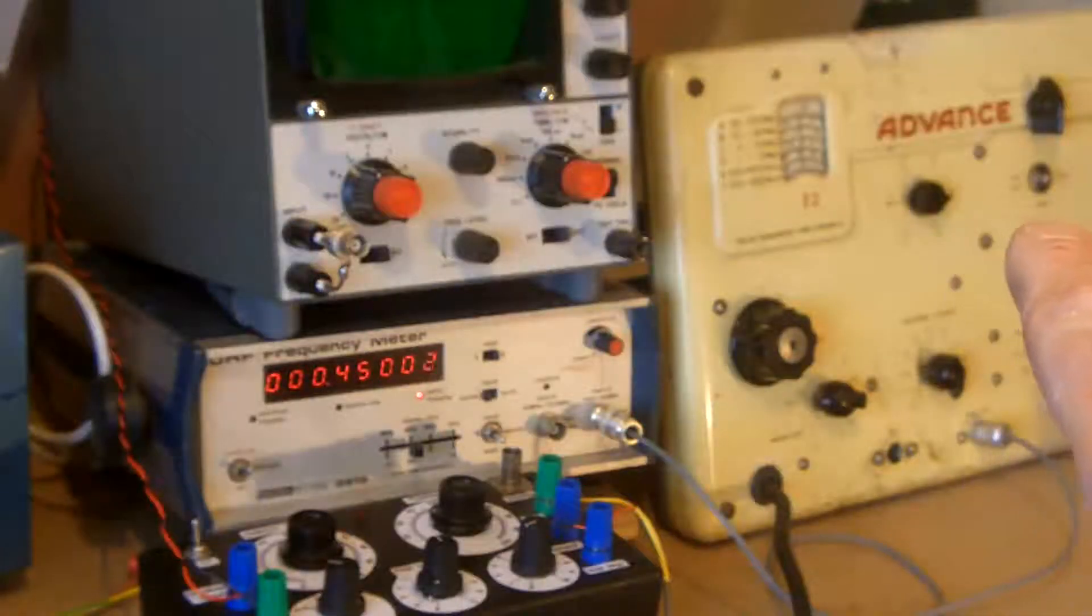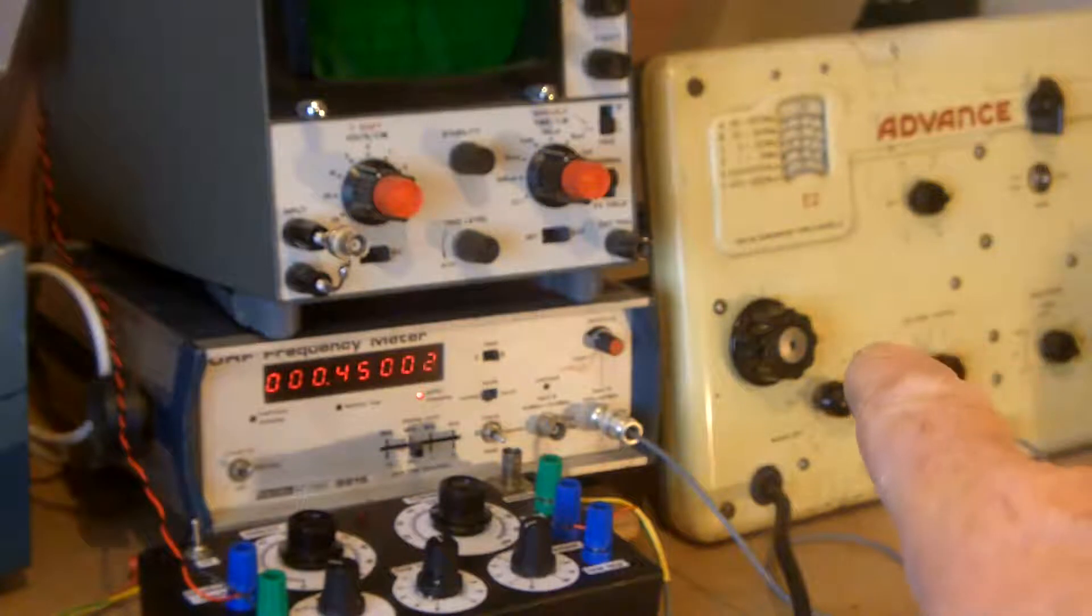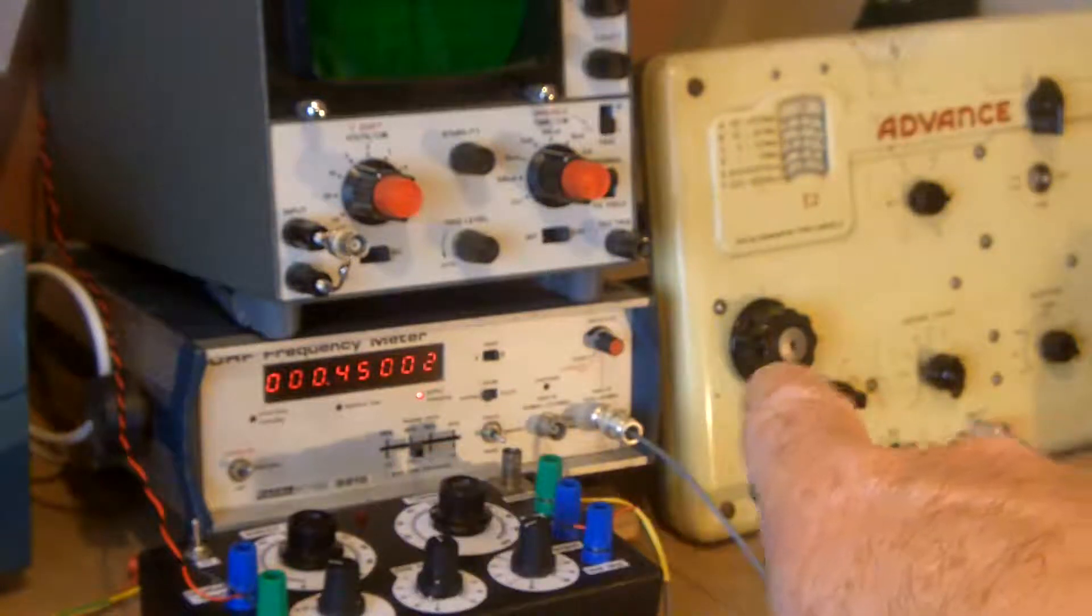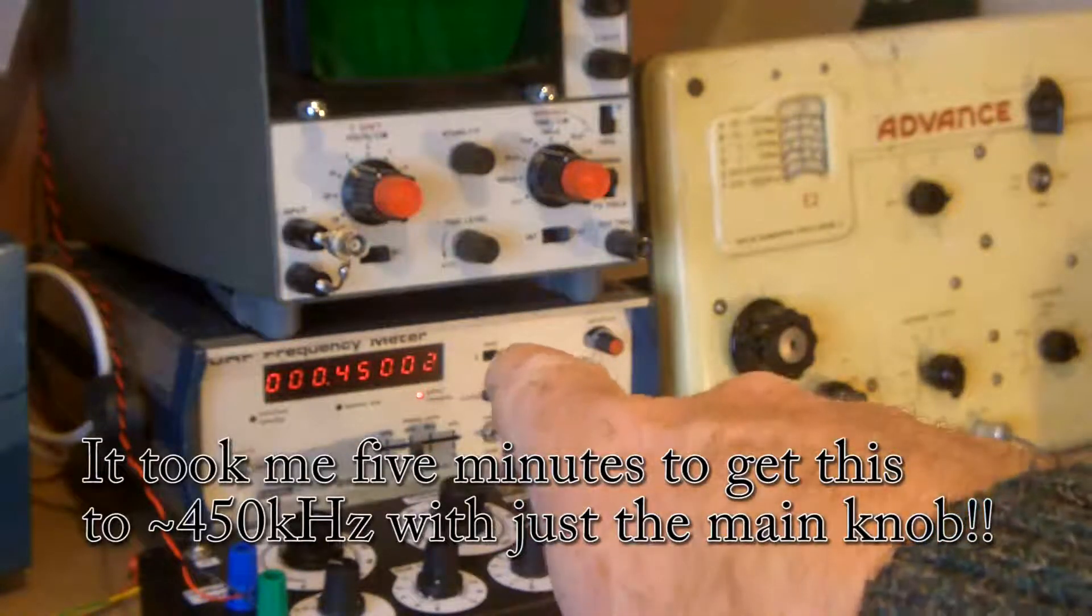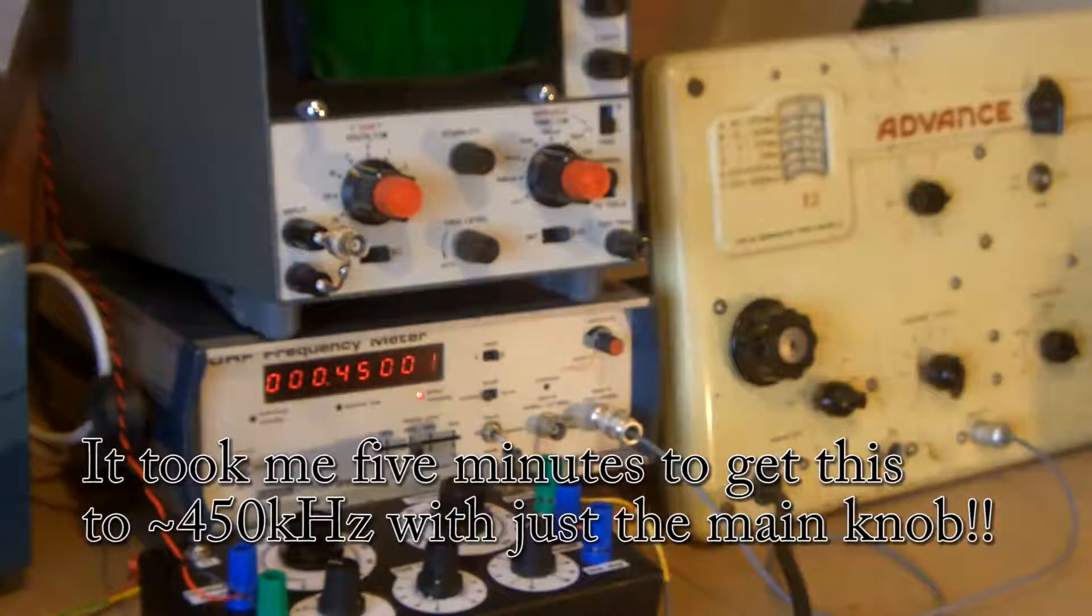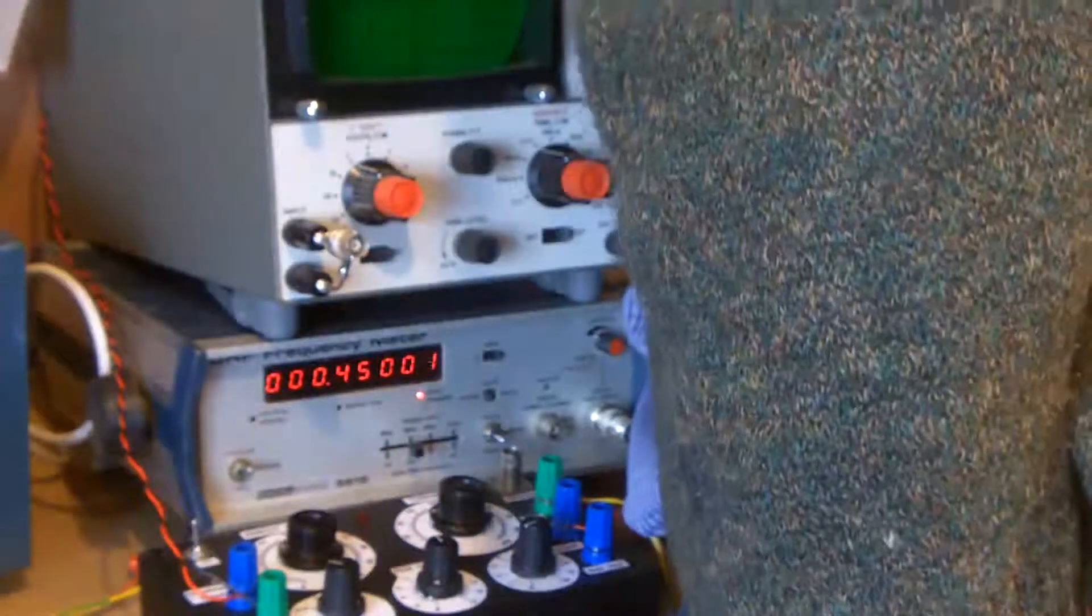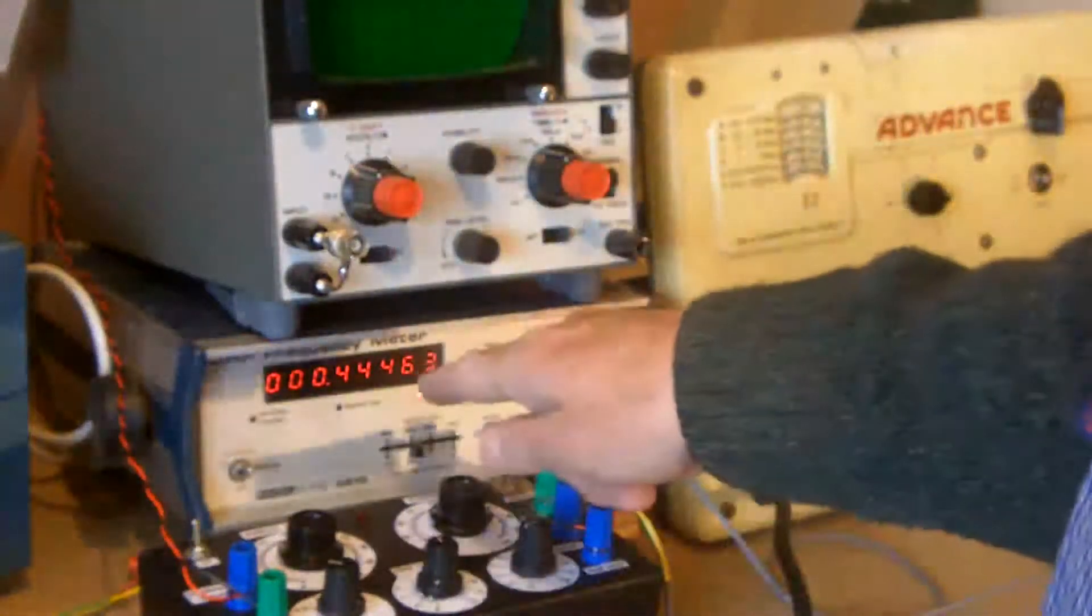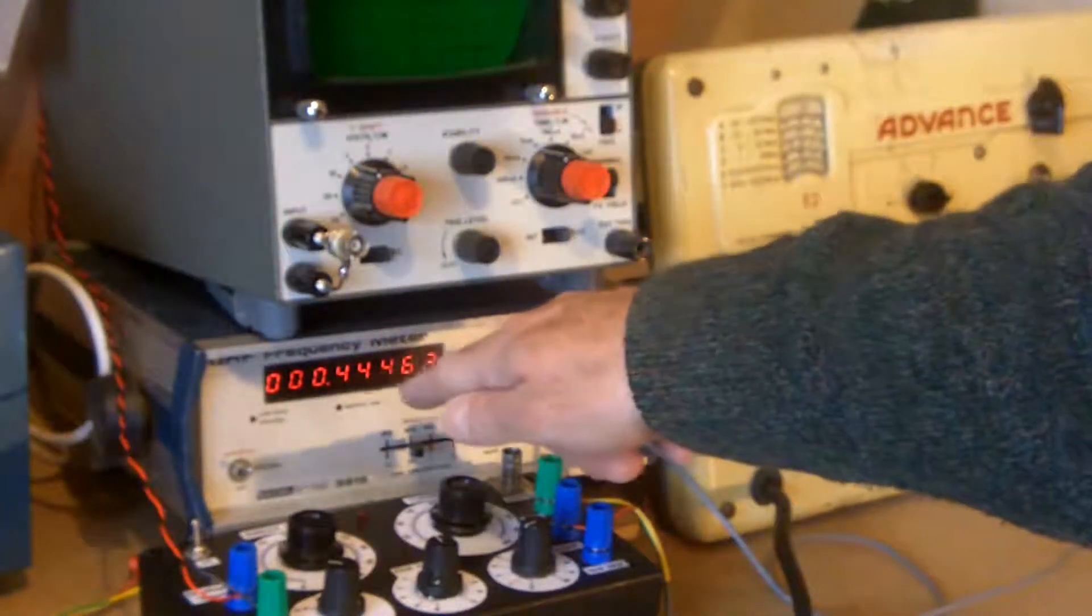I've put the signal generator back in place on the other bench and managed to tease it with its main control to 450 kilohertz give or take. You can see the last digit twitching away there. Very difficult to get it there. At the moment I haven't got this new capacitor coupled. I'm just going to couple that in without electrocuting myself. That's making contact now.